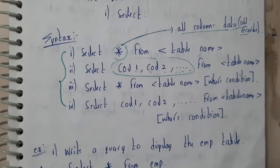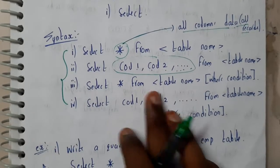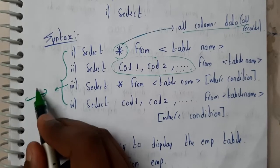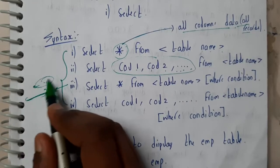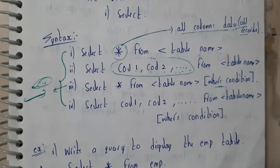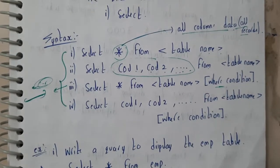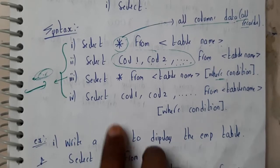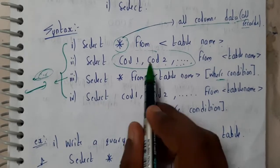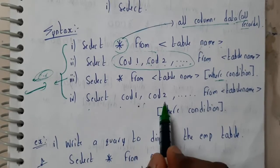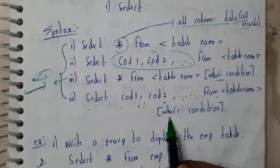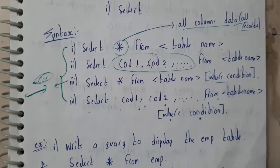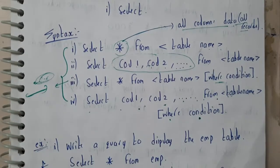The third syntax is: SELECT * FROM table_name WHERE condition — if you want to print a particular record, for example where employee number is 150, we use the WHERE clause. We'll go through WHERE clause in the next tutorial. The fourth type is: SELECT column1, column2, ... FROM table WHERE condition.